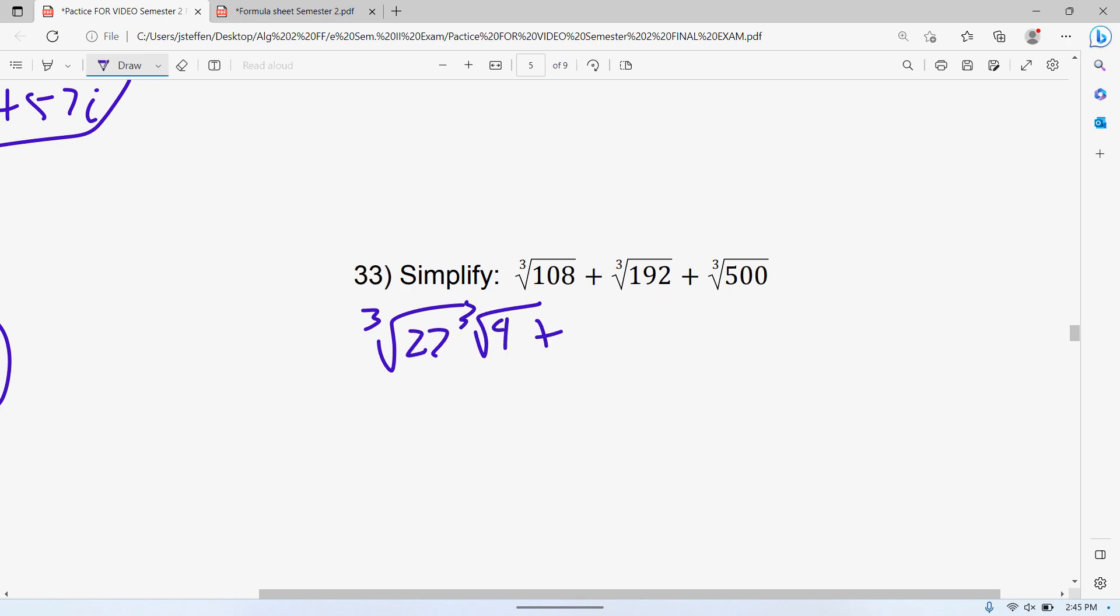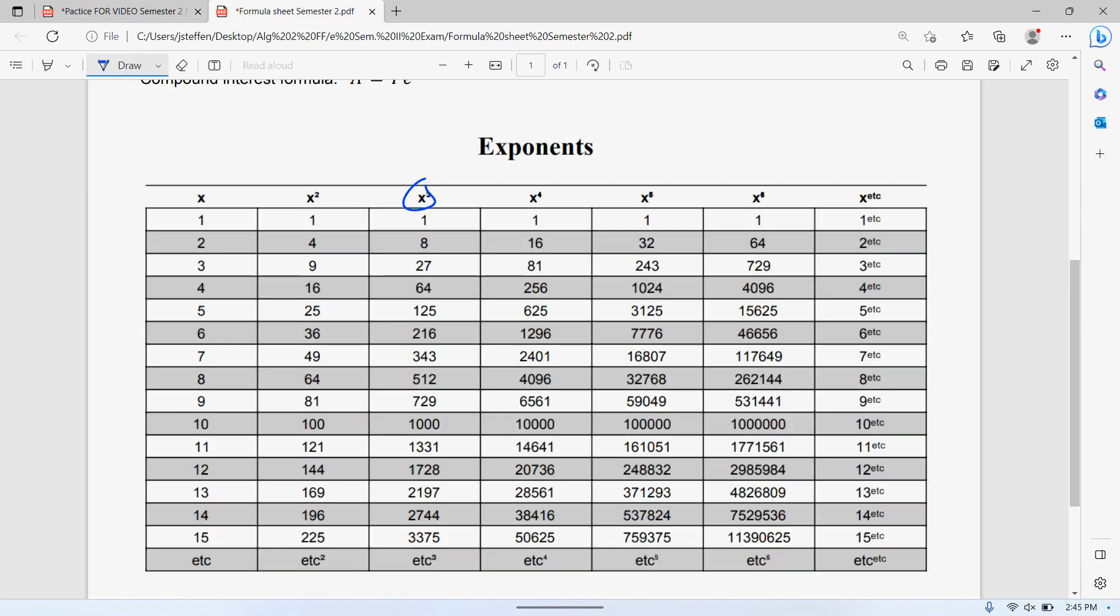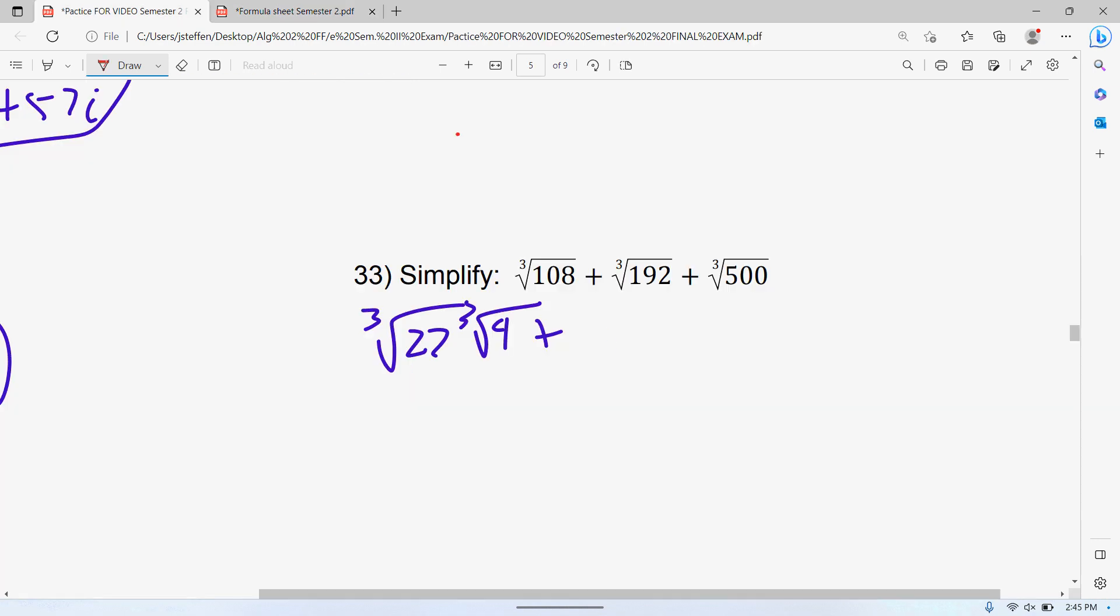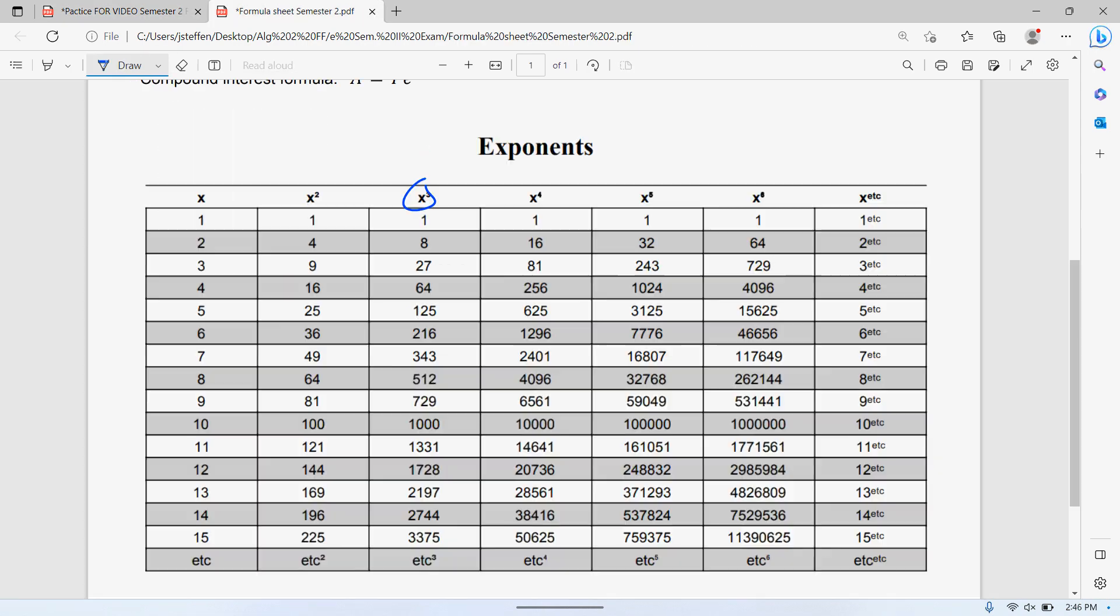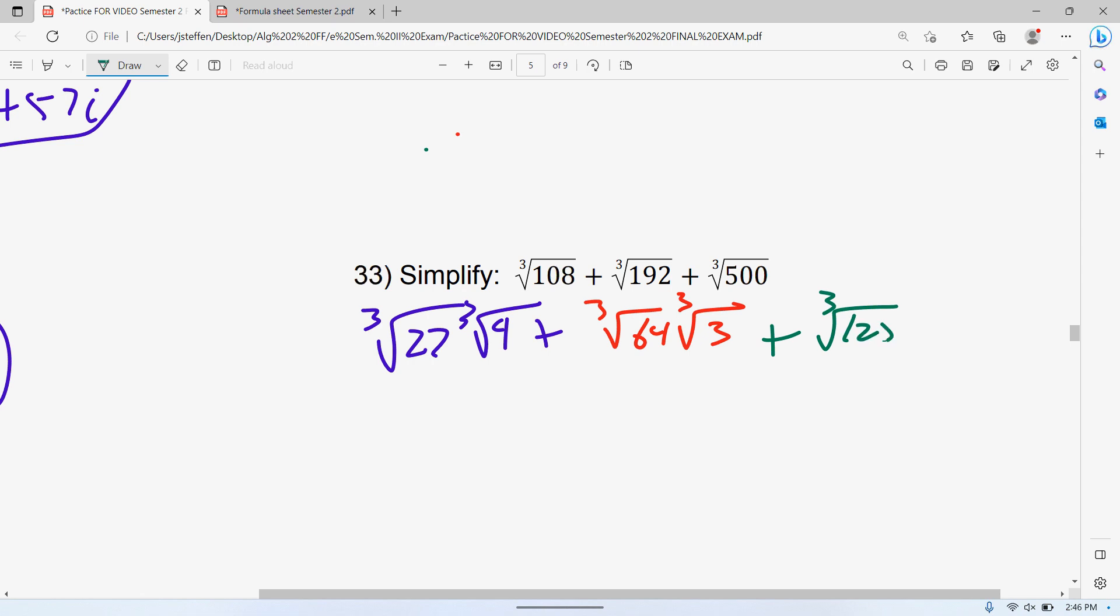192, so 192 divided by 125 doesn't work. 192 divided by 64, oh 64 times 3. So the third root of 64 is 4 times the third root of 3. And 500, so 500 divided by 343 doesn't work. 500 divided by 216 doesn't work. 500 divided by 125, oh 125 times 4. So third root of 125 times third root of 4. Third root of 125 is 5.